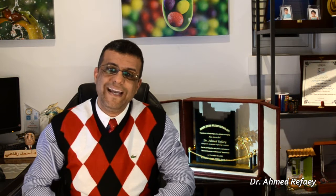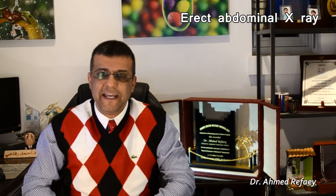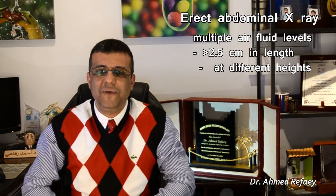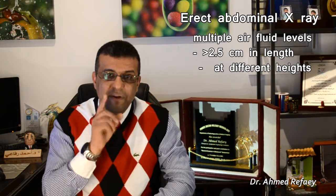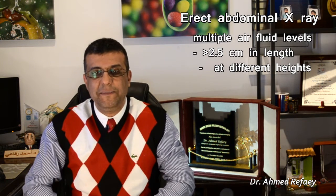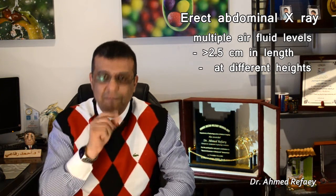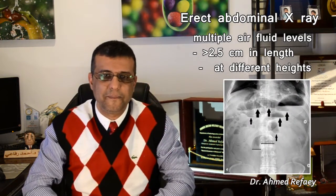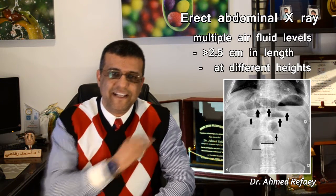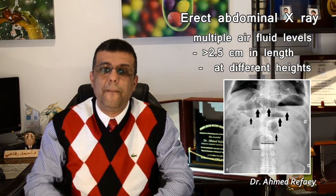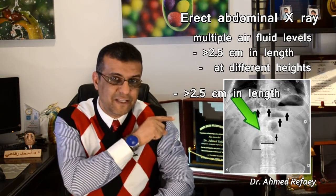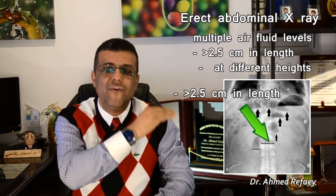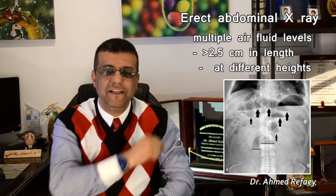What about erect abdominal x-ray? In erect abdominal x-ray, we can appreciate multiple air-fluid levels. The air-fluid level has to be more than 2.5 cm in length, in the same loop of bowel but at different heights, as seen in this image. This erect abdominal radiograph shows multiple air-fluid levels, greater than 2.5 cm, with fluid levels of unequal heights in the same dilated loop of small bowel.